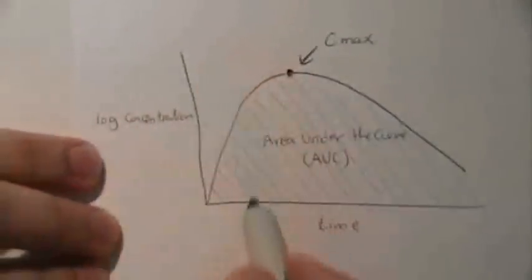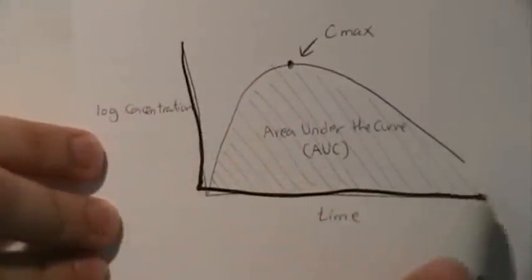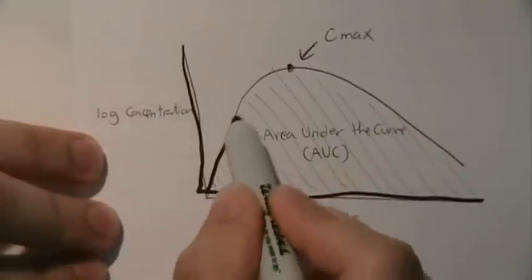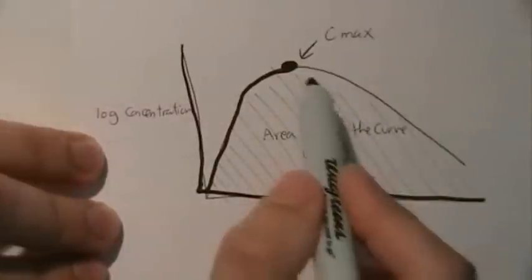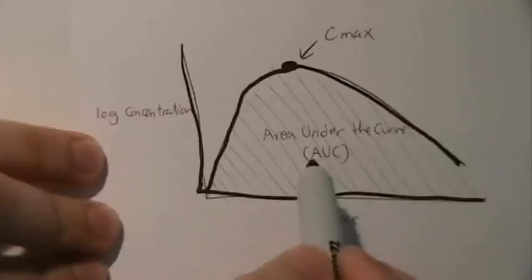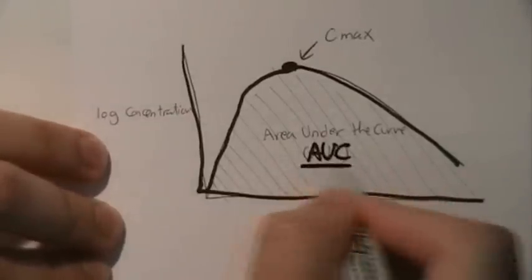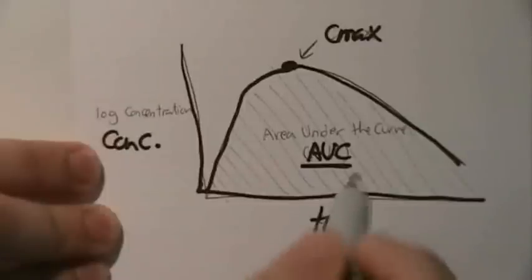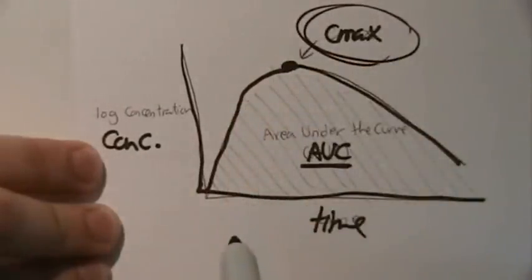So if you were to graph the concentration of drug in your blood versus time, when you take a tablet it gets absorbed gradually and the concentration in the blood increases until it reaches a peak. Then it starts decreasing as the body starts metabolizing and getting rid of the drug. So the extent of absorption is the area under the curve. And the rate of absorption can be represented by this peak, which we call Cmax.